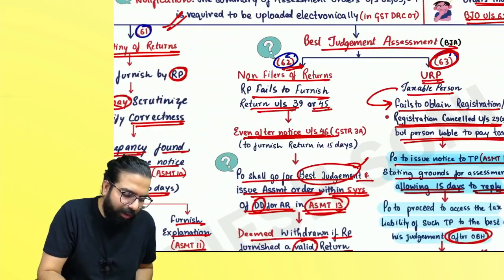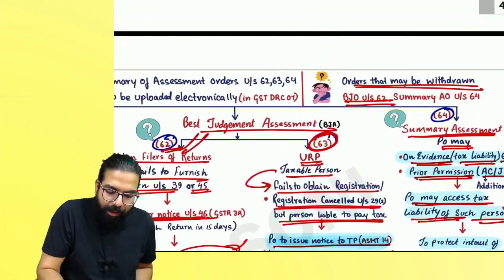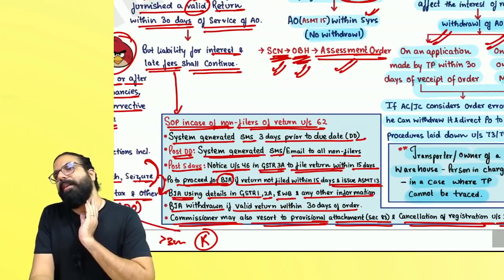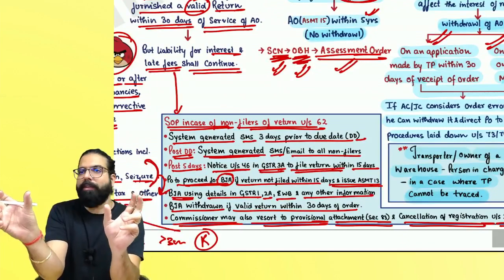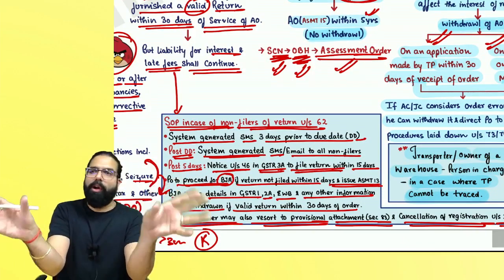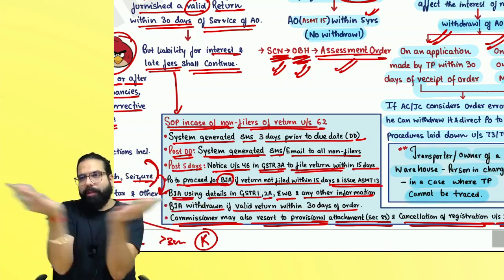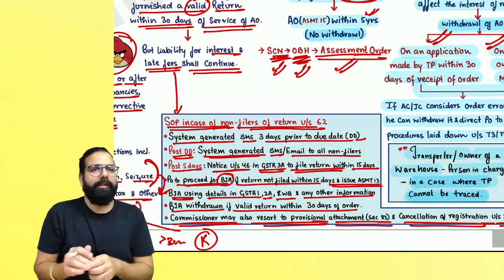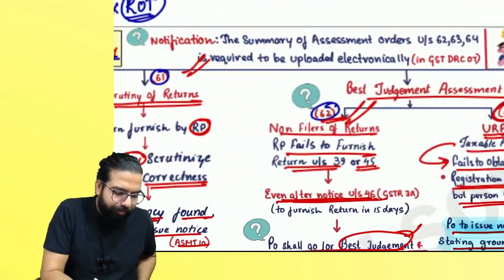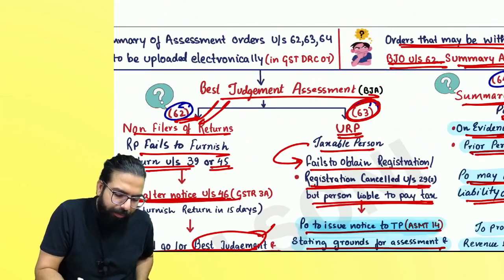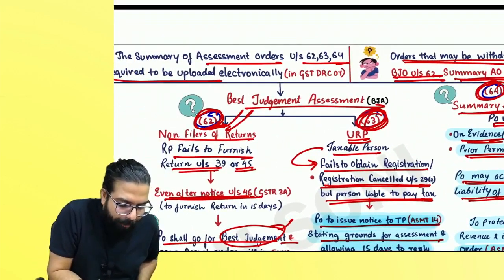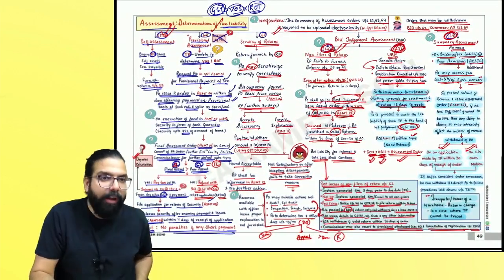Always remember: best judgment under section 62 can be withdrawn. Section 64 summary assessment order can also be withdrawn — if the taxable person gives an application or on his own motion — if the AC or JC recognizes on an application from the taxable person or on his own motion. In both cases, if they identify that the summary assessment order was erroneous, they can withdraw it. Also remember, assessment orders under sections 62, 63, and 64 — their copies will be uploaded electronically in GST DRC-07.